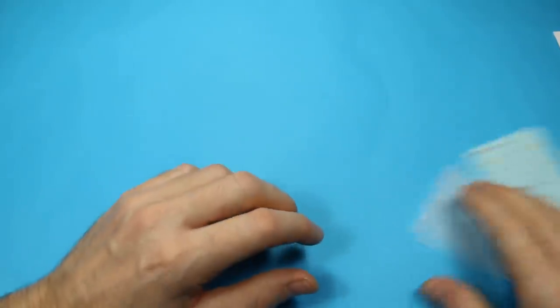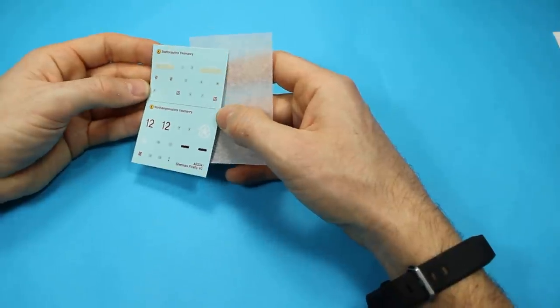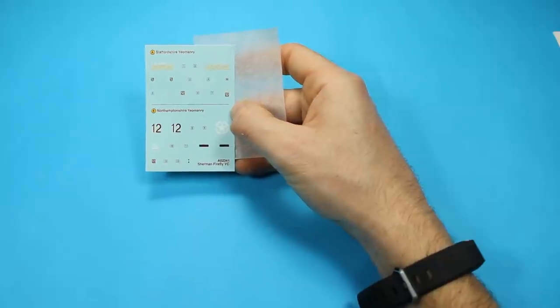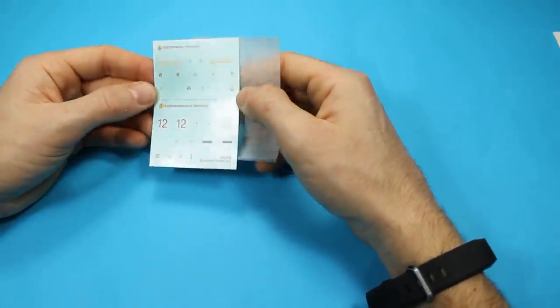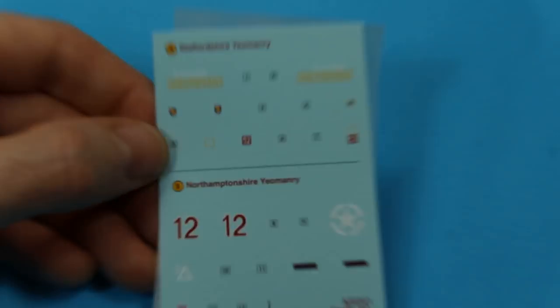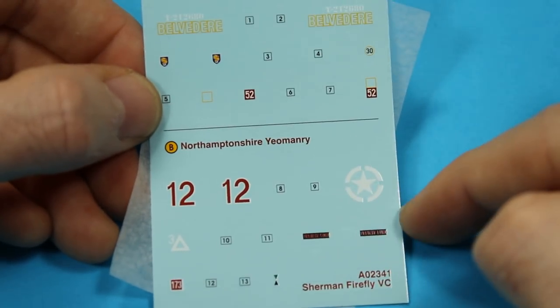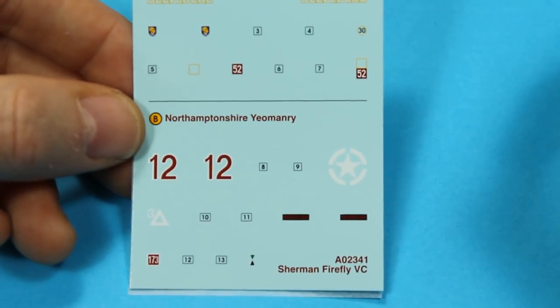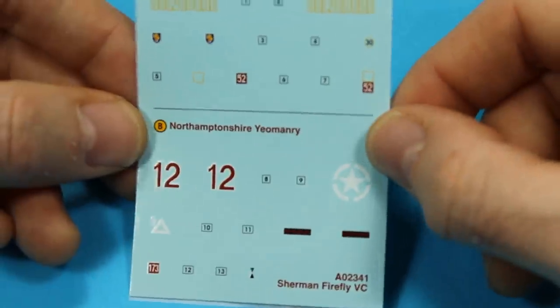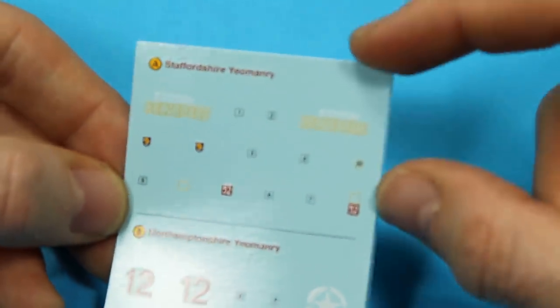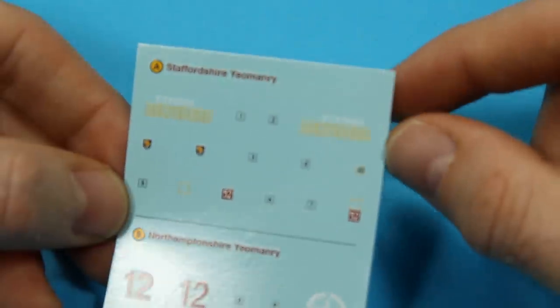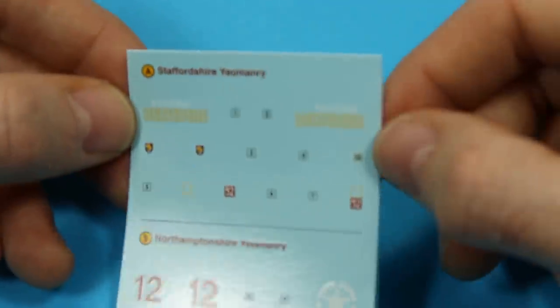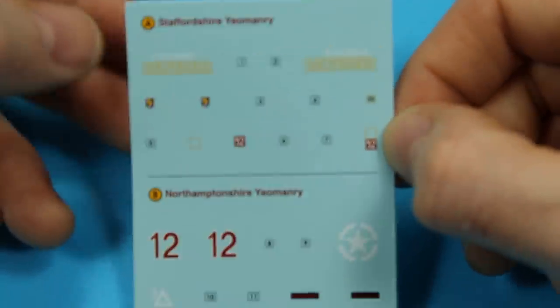The decals are stunning, they look to be Cartograf. I don't know if it's on the side of the box, yes it is, so they are Cartograf. We've got two options, so you've got the famous one, which is meant to have knocked out Michael Wittmann's Tiger, and it seems to be the most plausible outcome of that now, it does seem that it's claimed by this Firefly. Then we've got this other one as well, which I have actually managed to find pictures of, which is Belvedere, and a bit of a curious scheme on that, which we'll go through in the next section. So that's your two schemes, A and B.